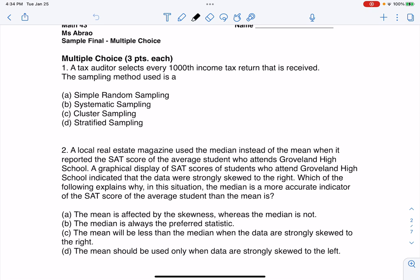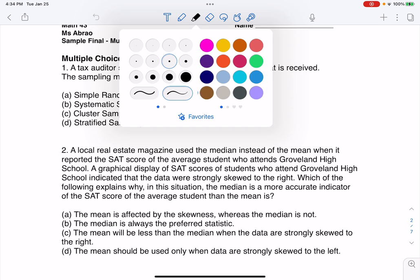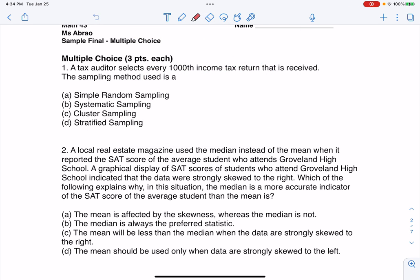So the key phrasing in here, let me use a different highlighter color, is every thousandth. When you hear that kind of phrasing, that tells us that we have systematic sampling. So let me circle this. This would be our answer, and this is a chapter one problem.